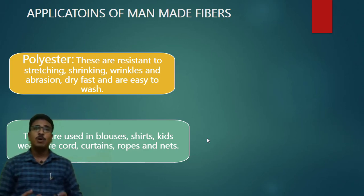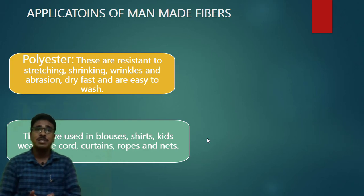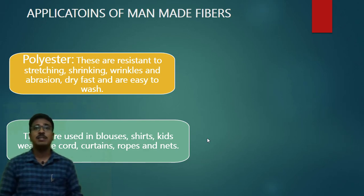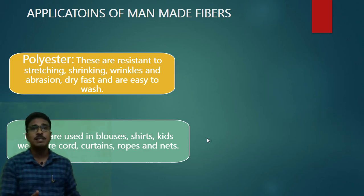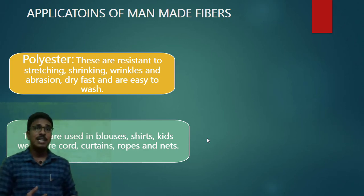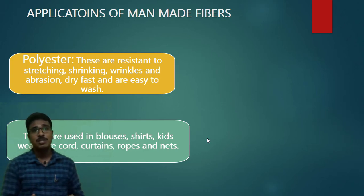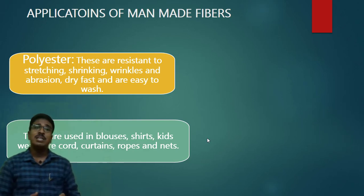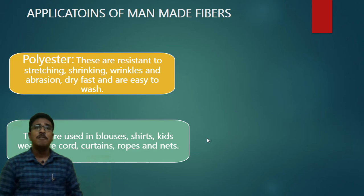Polyester fibers have good resistance to stretching and shrinkage — it won't shrink the way cotton does, and it won't form wrinkles. With cotton, creases appear after washing and you need to iron the garment each time. That problem does not exist with polyester. It also has resistance to abrasion, dries easily, and is easily washable. These are some of the unique properties that make polyester so widely used.